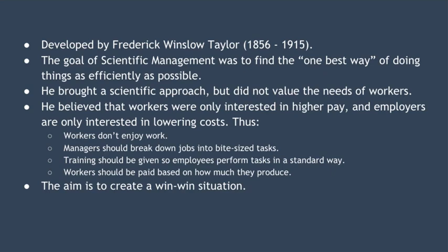To help with this, Taylor thought managers should break down each employee's job into more manageable, bite-sized tasks. Training should then be given so that all employees perform these tasks in a standard way. Finally, workers should be paid based on how much they produce — how productive they are — and he called this piece rate pay. The idea of all these steps was to create a win-win situation: workers would be incentivized to work hard to earn more, and business production would be as efficient as possible, maximizing profits.